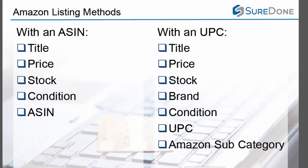There are three main methods for listing items on Amazon that we are going to be walking you through today. Listing with an ASIN is the most straightforward — it requires a title, a price, a stock, a condition, and that Amazon-specific ID number, or ASIN.